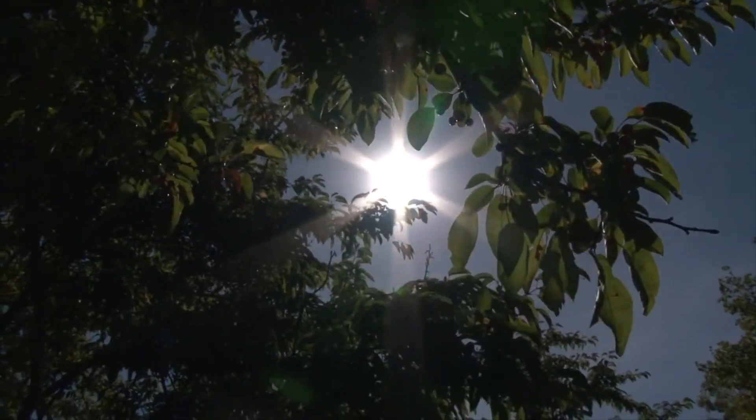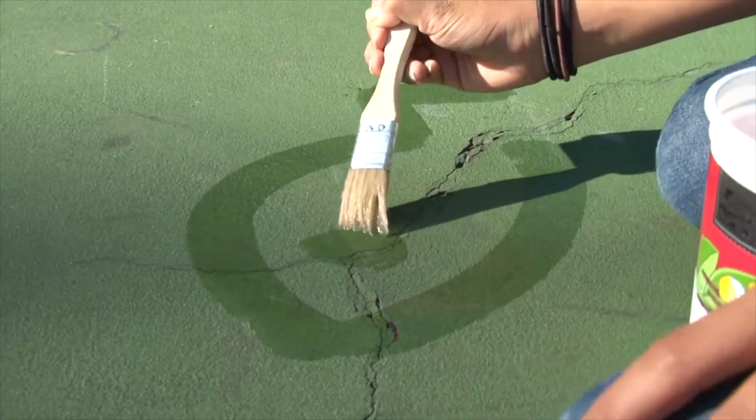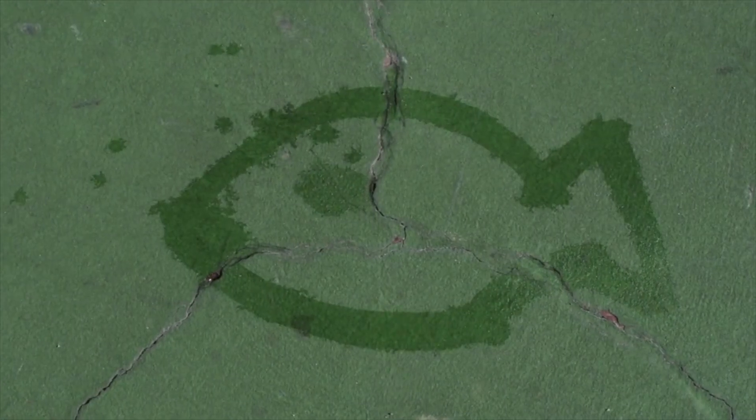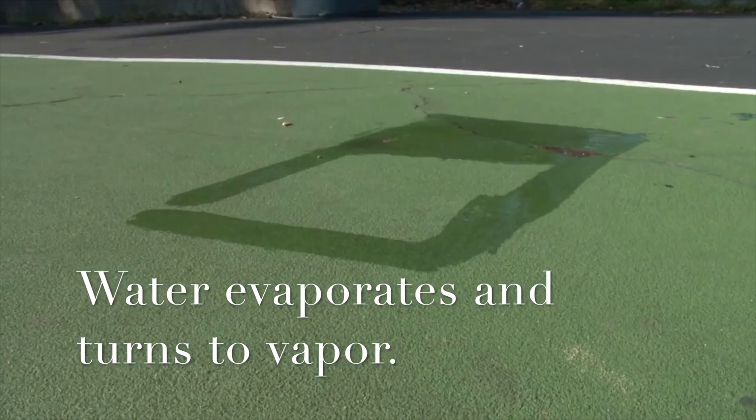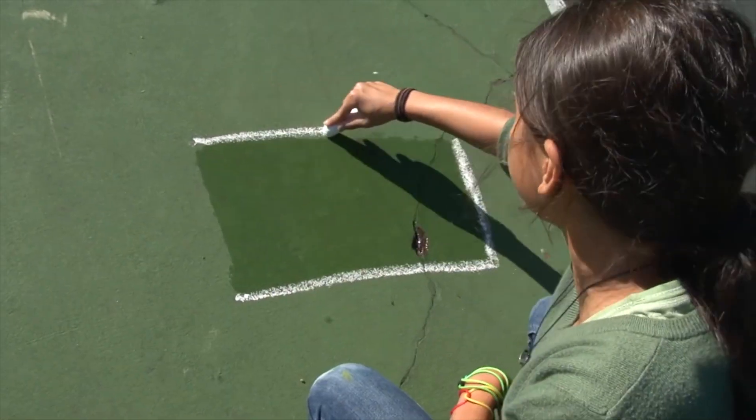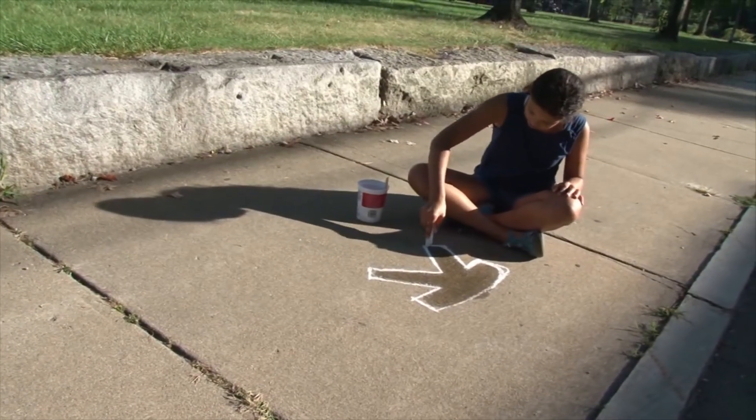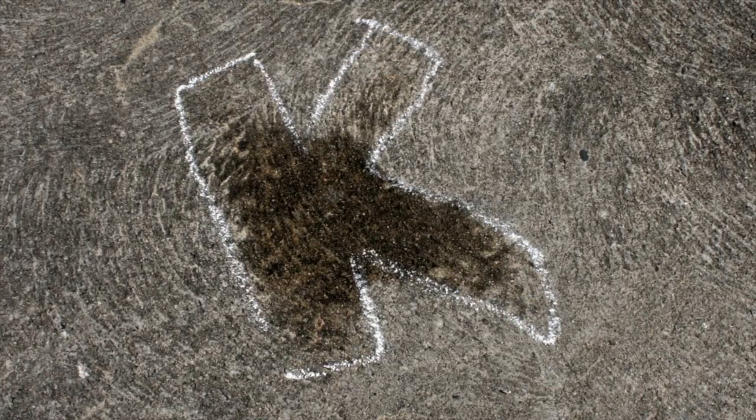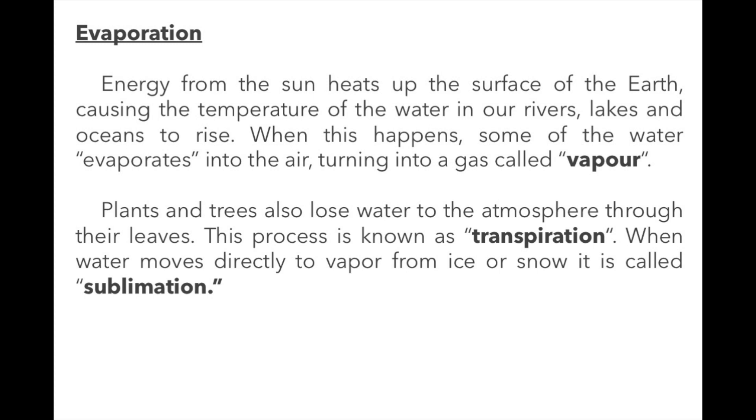If you spill a glass of water outside, you will notice that a few hours later, the water is gone. That is because water slowly turns from liquid into gas called water vapor. The process of water turning from liquid into gas is called evaporation. Energy from the sun heats up the surface of the Earth, causing the temperature of the water in our rivers, lakes, and oceans to rise. Evaporation happens faster on a hot day.